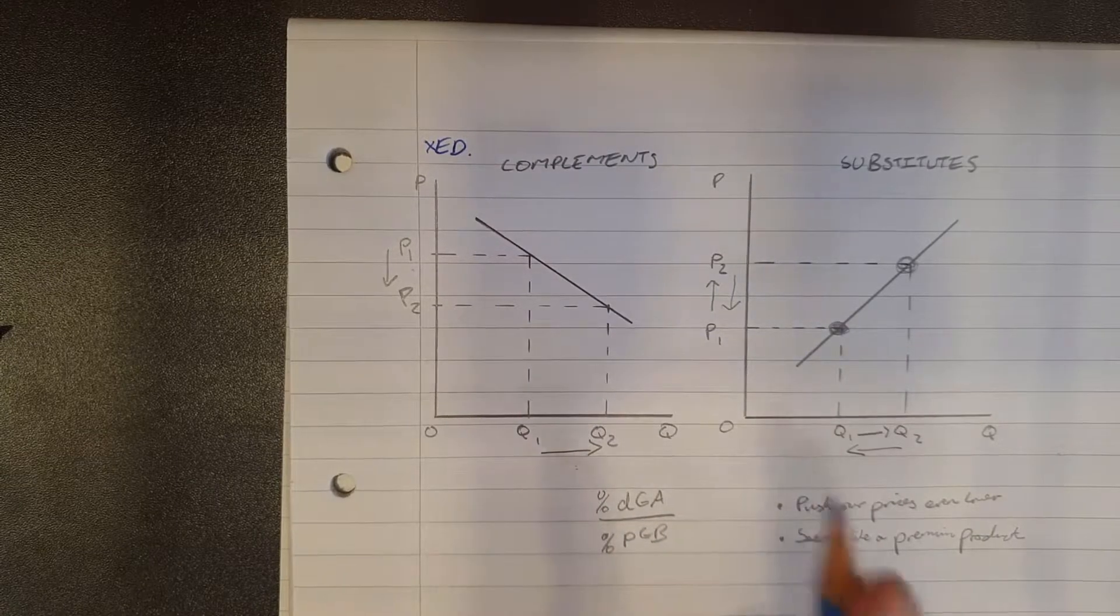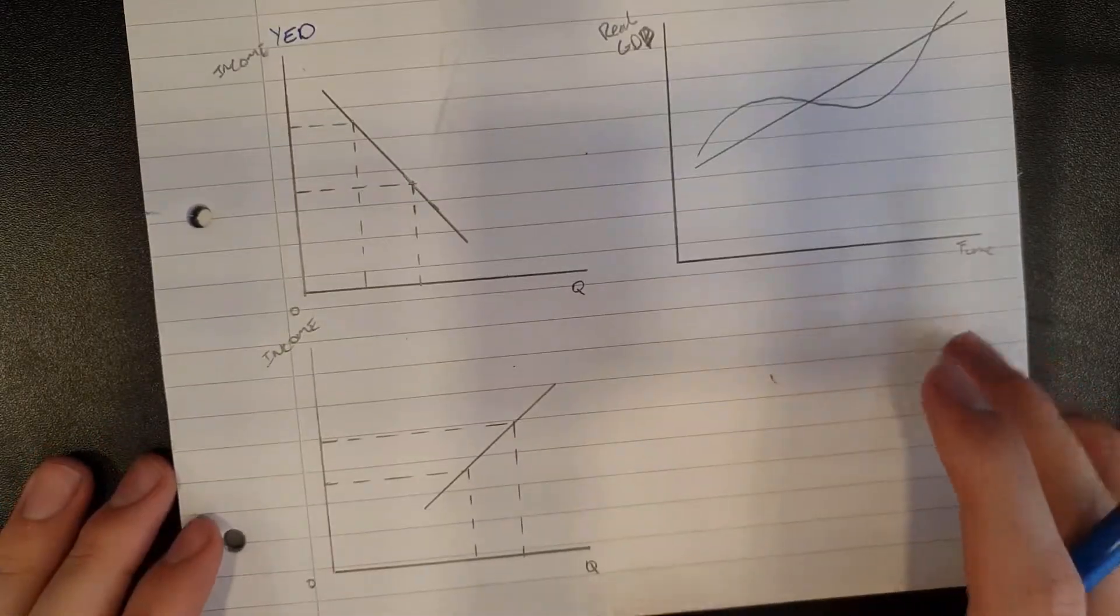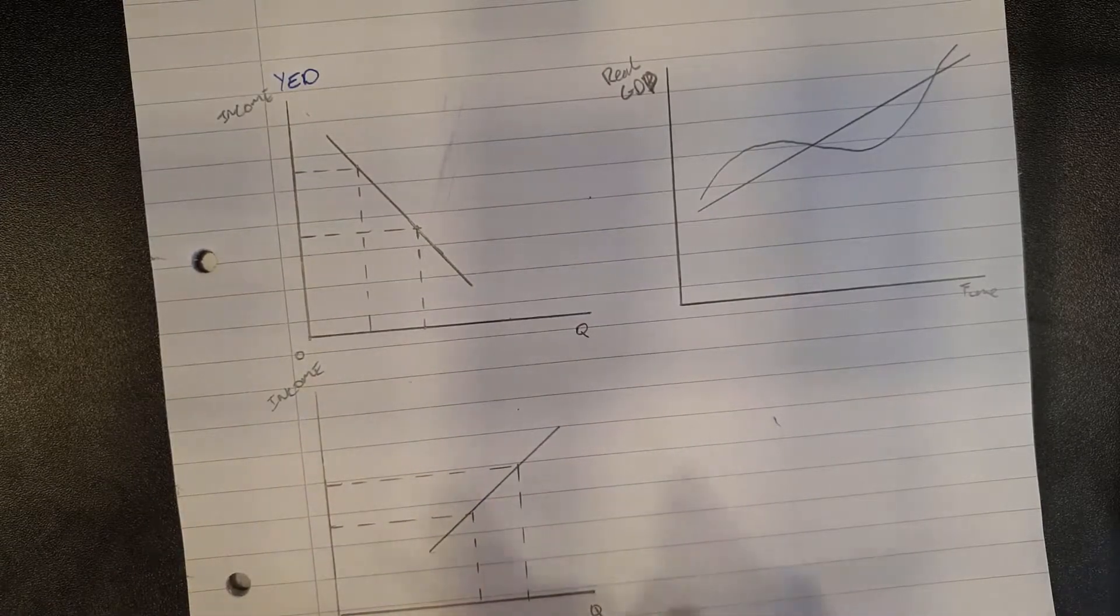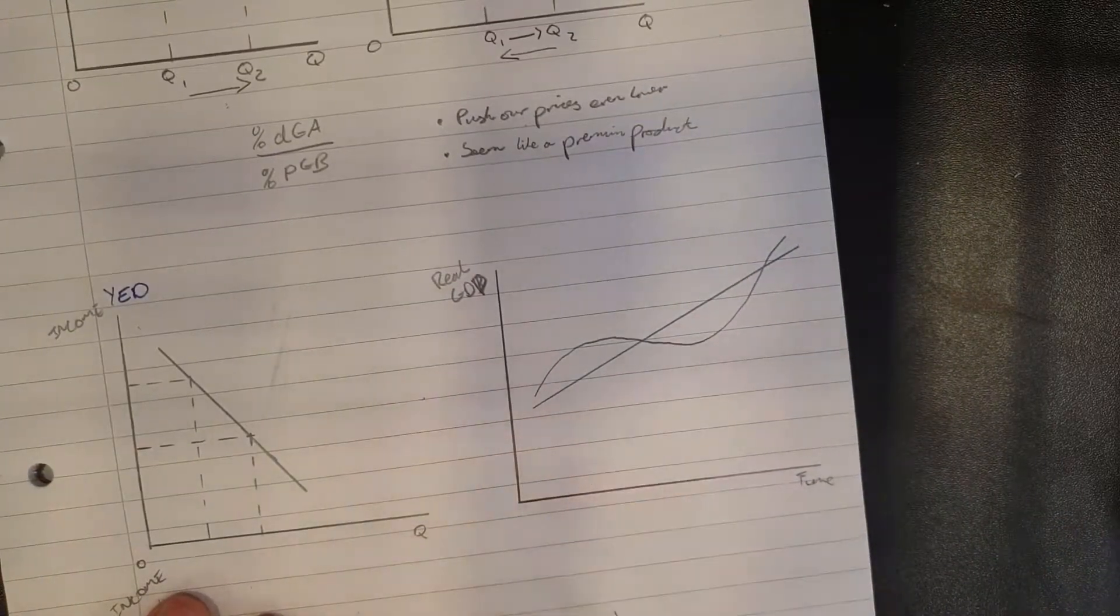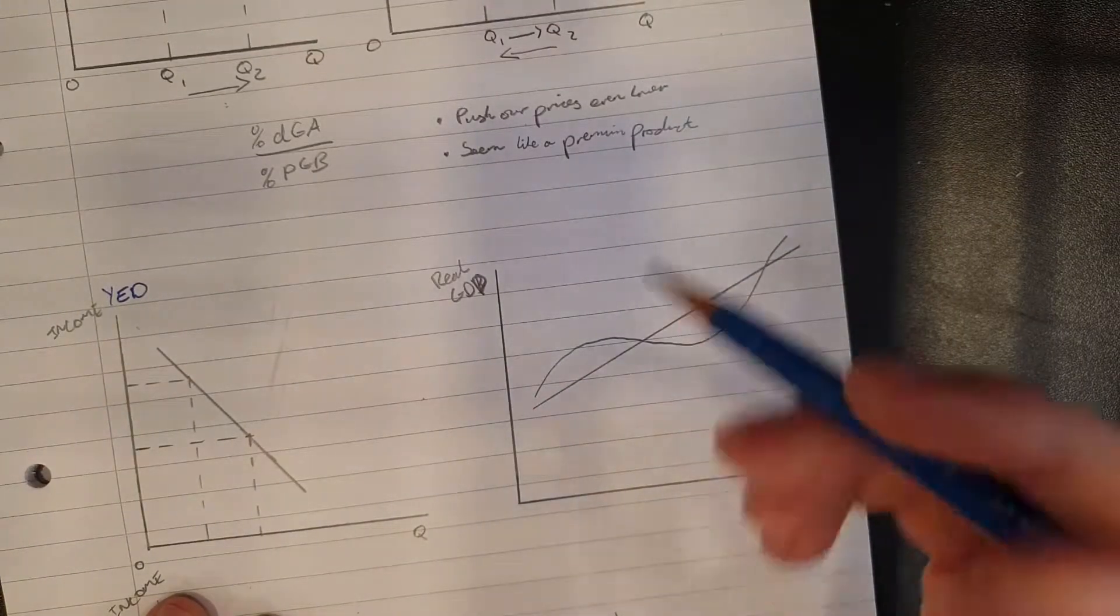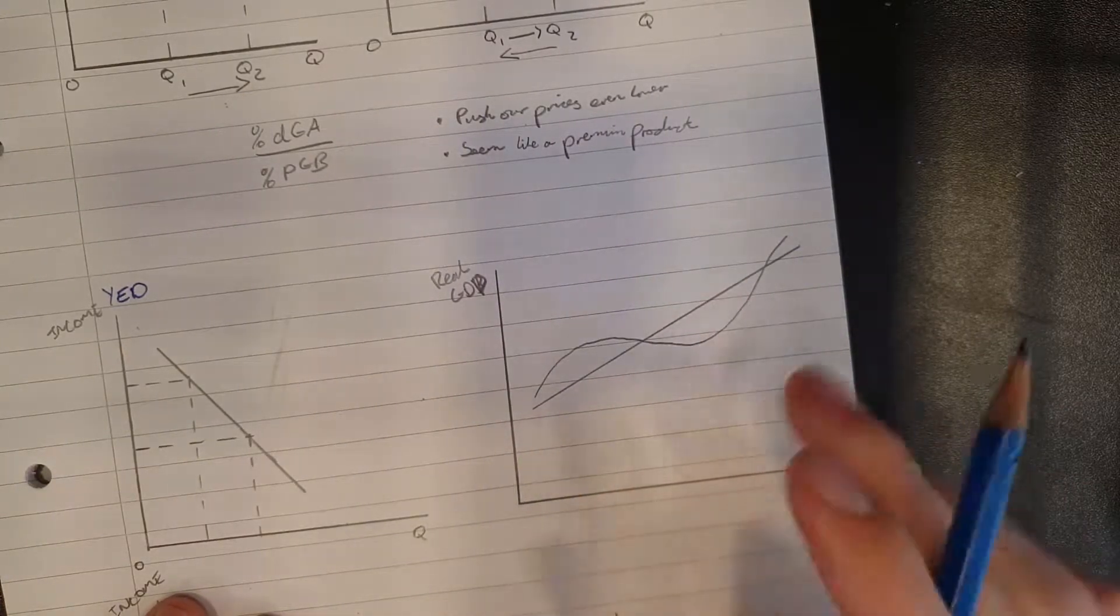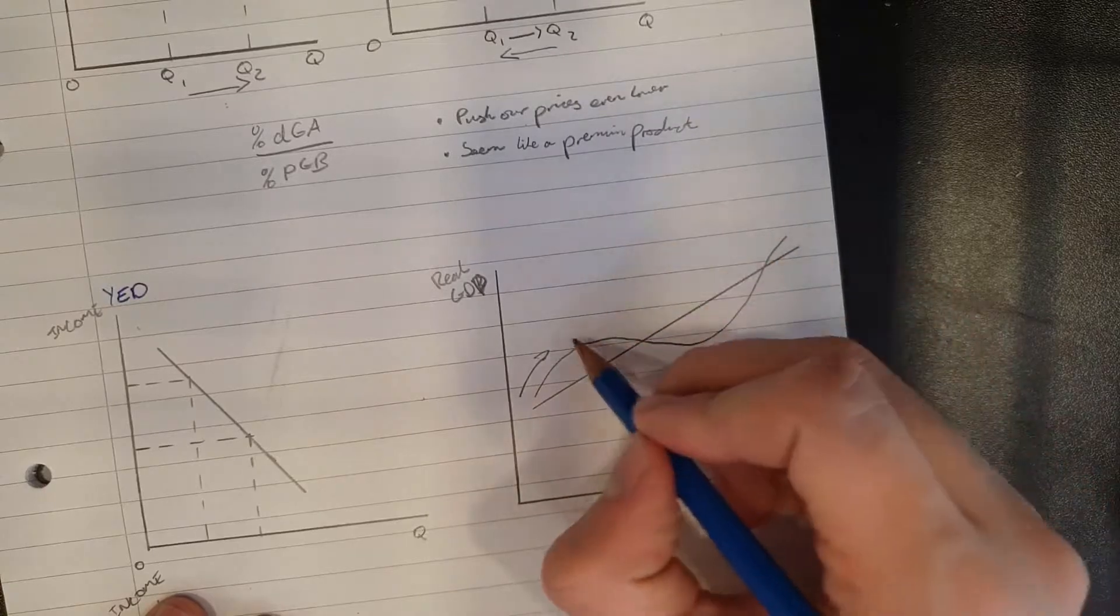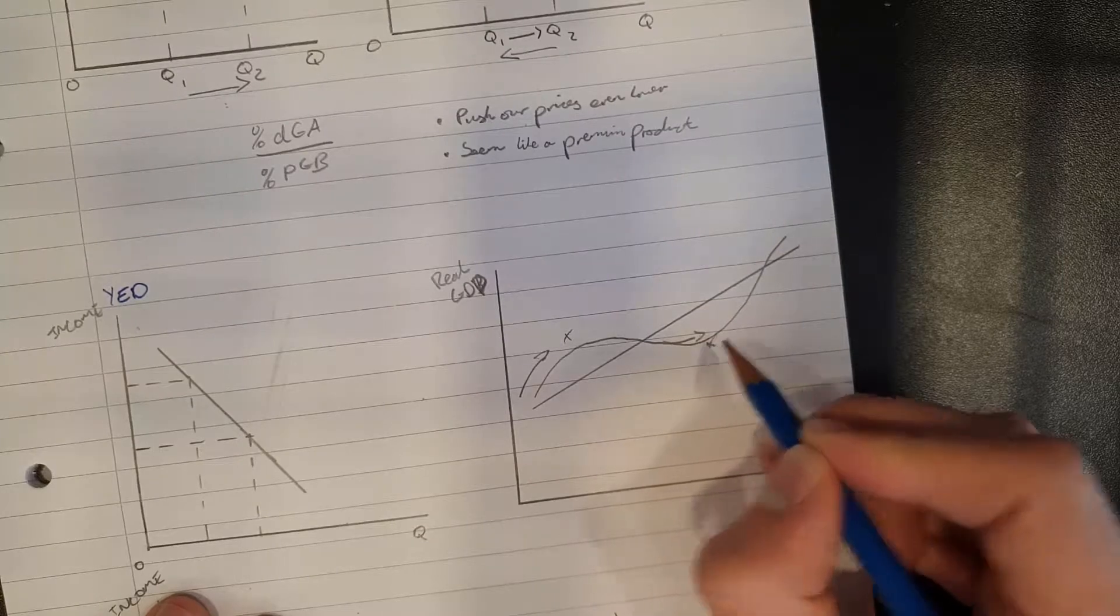Now let's move on to the final type, which is YED. OK, now this is our last elasticity measure. This is YED, which is income elasticity of demand. And the basic principle of YED has to do with the economic cycle, which I've drawn over here on this diagram. So here's a GDP time diagram. And essentially, this line represents the average GDP growth rate. But what really happens is that this is just a best fit line for how the economy works in cycles. So here we have a boom going up when we're above the normal growth rate. And then we have a downturn down here.